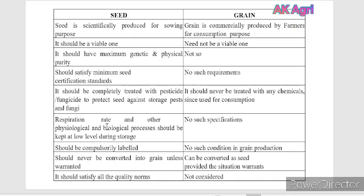In case of seed, respiration rate and other physiological and biological processes should be kept at a low level during storage to avoid further deterioration. No such specifications are followed for grain. Seed should be compulsorily labelled, whereas no such condition applies to grain. Seed should never be converted into grain unless it has not been treated with any chemicals. Grain can be converted as seed provided that all quality parameters are maintained. Seed should satisfy all quality norms, whereas that is not considered in case of grain.